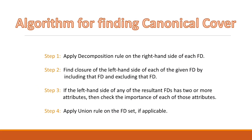Now the algorithm for finding the canonical cover. There are four simple steps following which you can easily find the canonical cover. Our first step is to apply the decomposition rule on the right-hand side of each FD of the given FD set. Step two: find the closure of the left-hand side of each of the given FDs by including that FD and excluding that FD. This will help us find out which are the essential FDs among all the FDs in the given FD set.